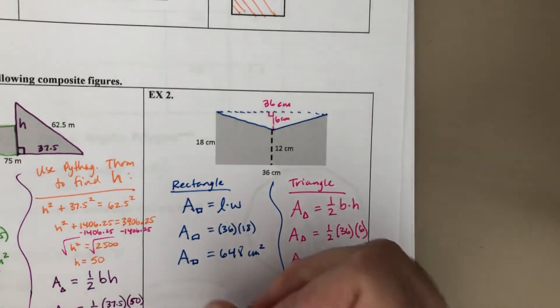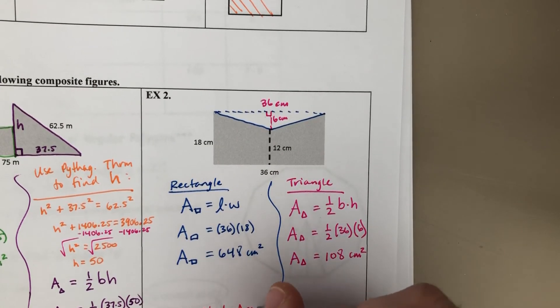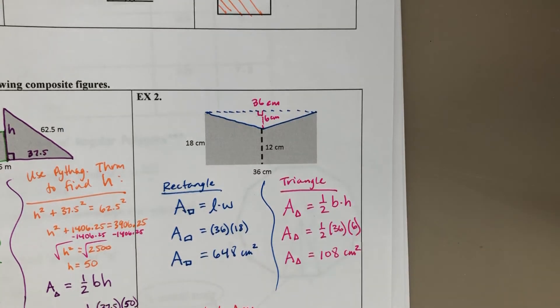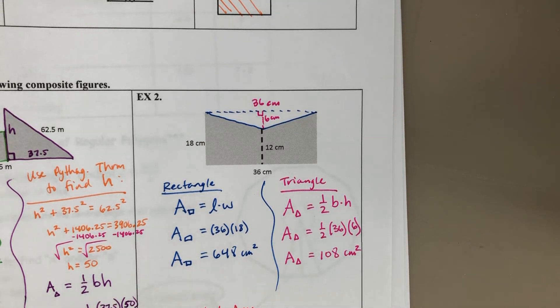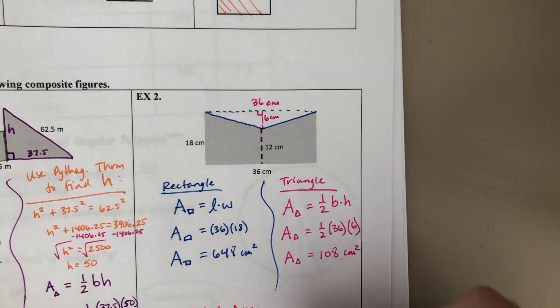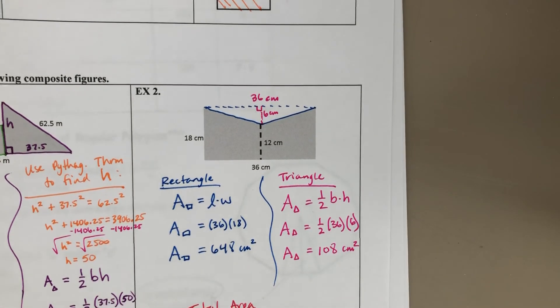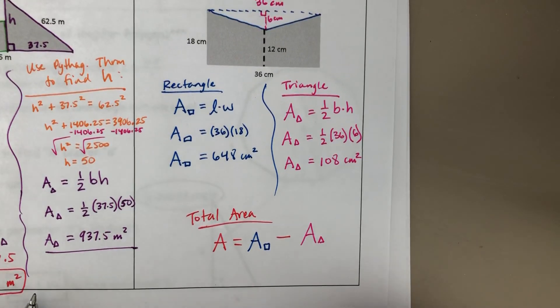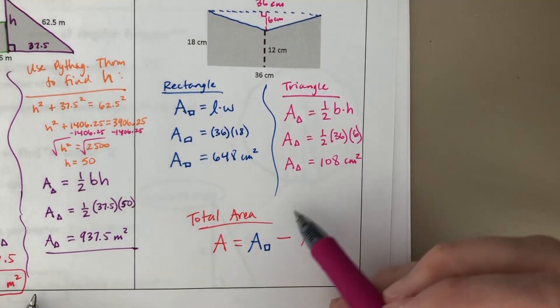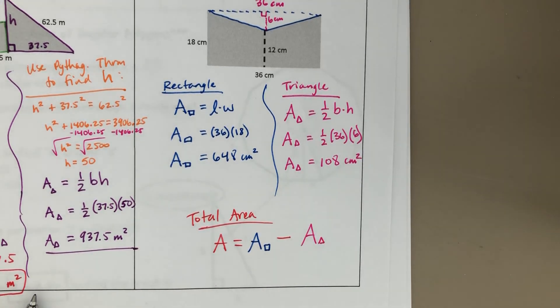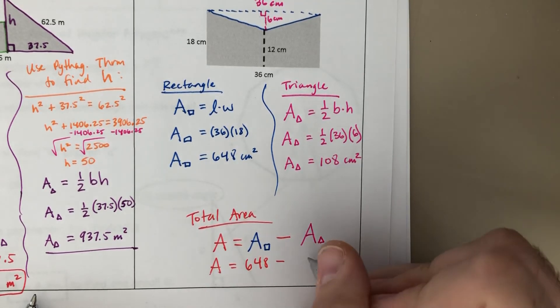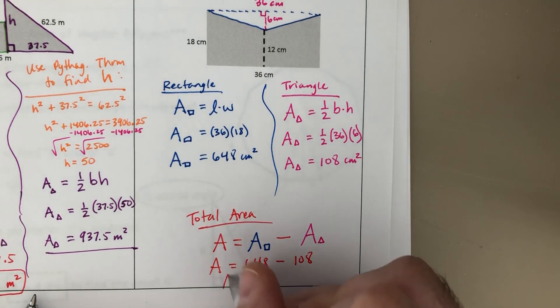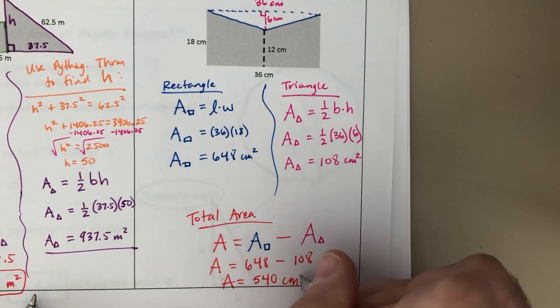So my total area, my big capital A, that's going to be the area of the rectangle. Now this is where it's a little different. Area of the rectangle minus the area of the triangle. So again, area of rectangle taking out that triangle. So it's a subtraction of areas this time. So our area of the rectangle was 648. I'm going to subtract out the 108 for the triangle for a total area of 540 square centimeters.